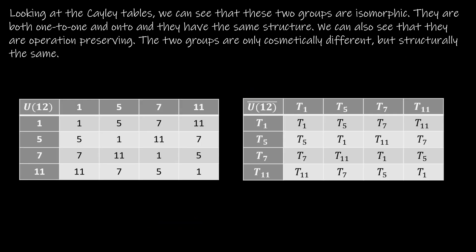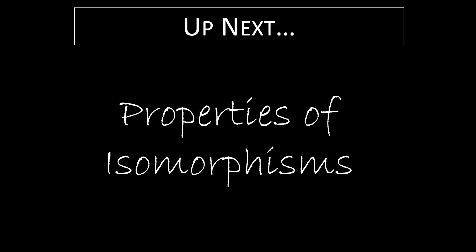If we take a look at the Cayley table for U12 and the Cayley table using Cayley's theorem for U12 — with t_1, t_5, t_7, t_11 — we can see these are in fact the exact same group. They have the same structure; they're only cosmetically different but structurally the same. The mapping is one-to-one, onto, and operation-preserving. For example, seven times eleven gives the same result as T7 composed with T11, which gives T5.